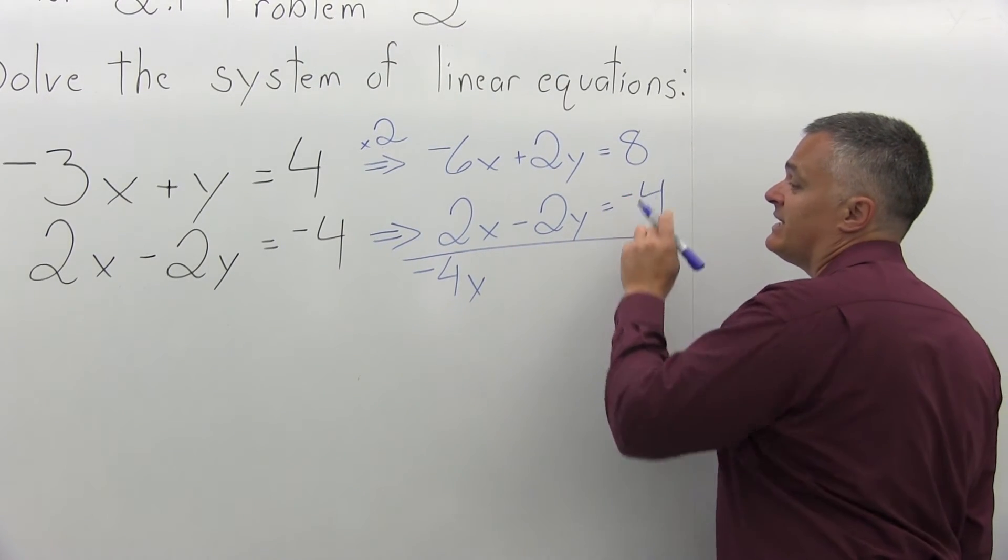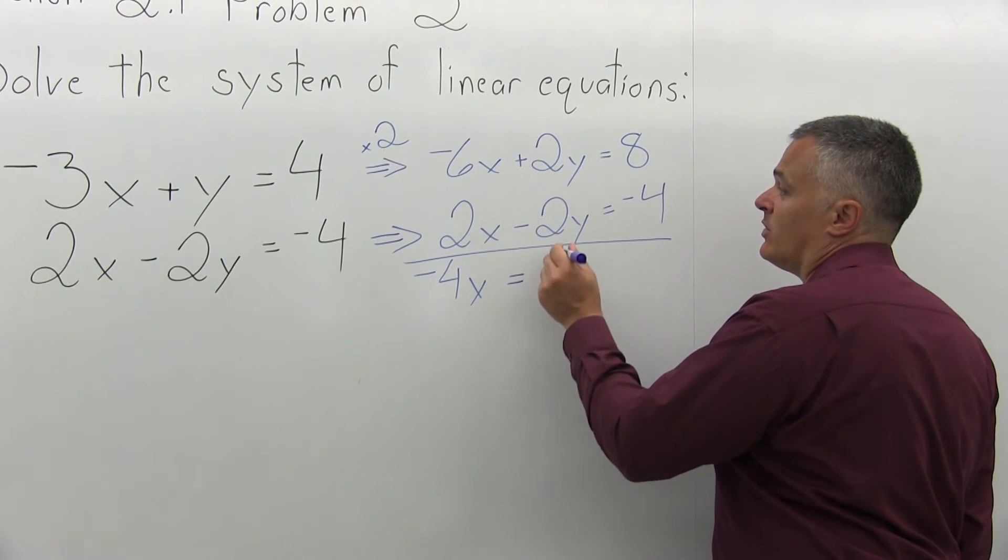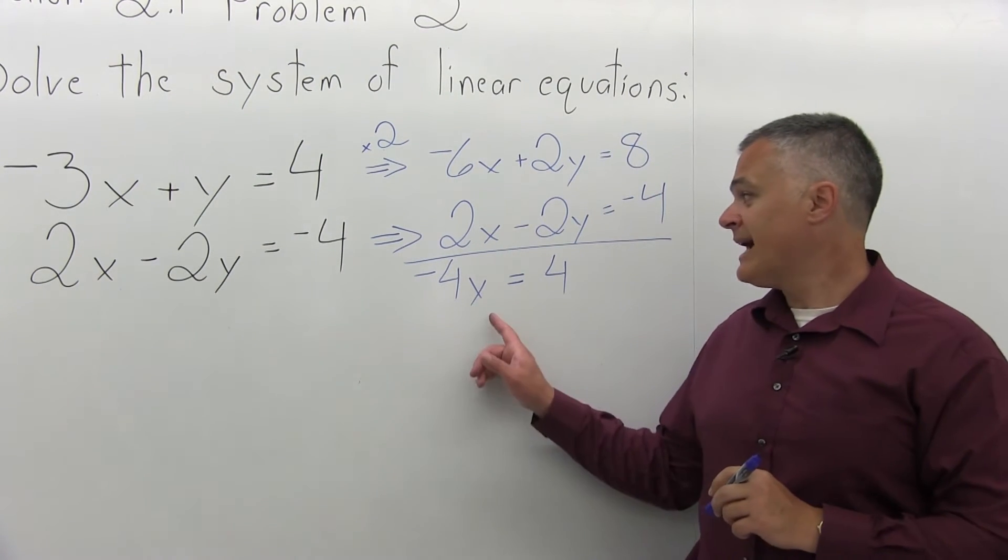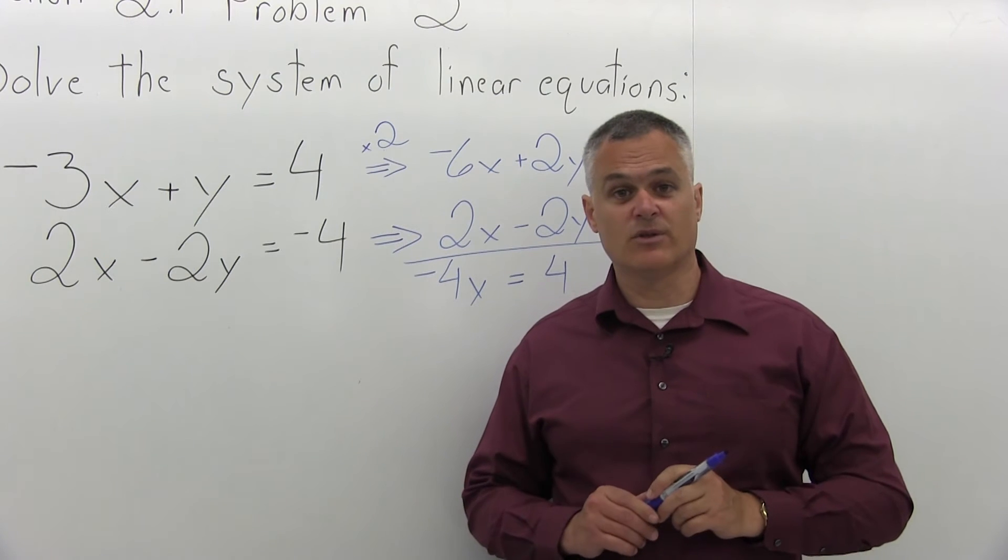And positive 8 and negative 4 will be positive 4. So that was step two. I added the equations together to cancel one of the variables.